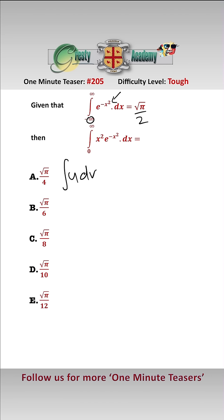Secondly, we're going to use integration by parts. The integral of u dv equals uv minus the integral of v du.